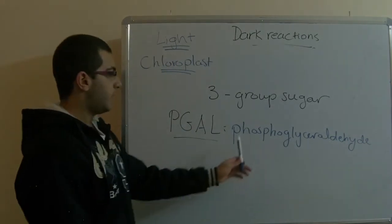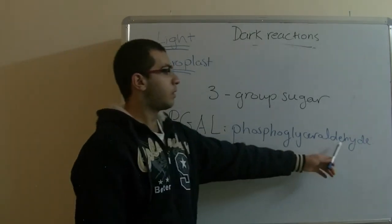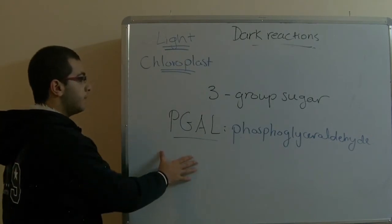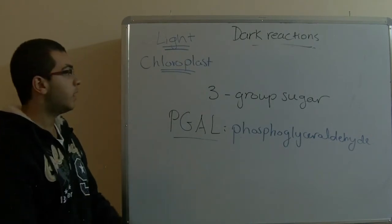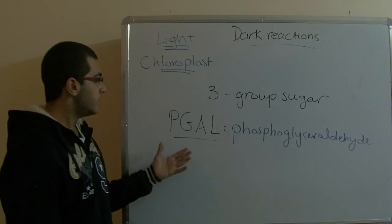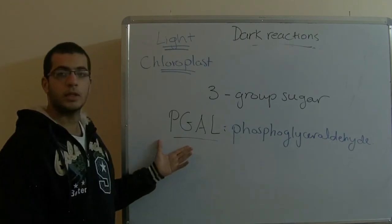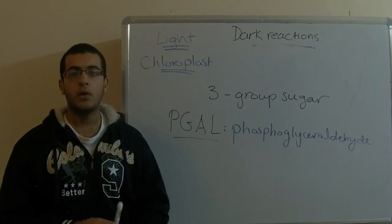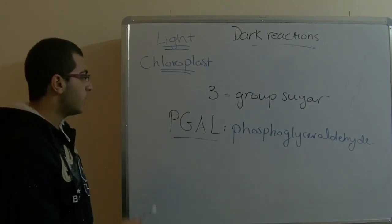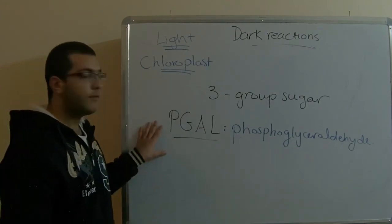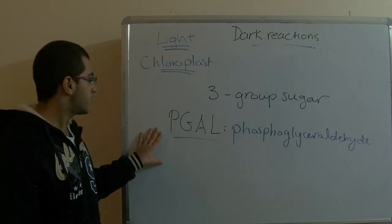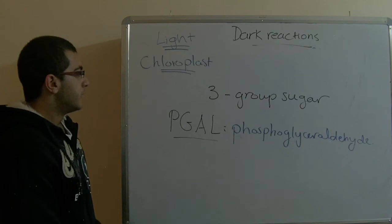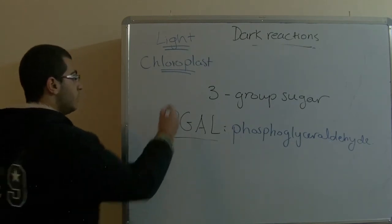Phosphoglyceraldehyde means that it contains phosphorus, glycerol, and so on. This is the first production of the dark reactions, and this production resembles a crossway for all the metabolic productions. In other words, every production in the biosynthesis pathways has an origin of PGA-L. So this was his first conclusion.